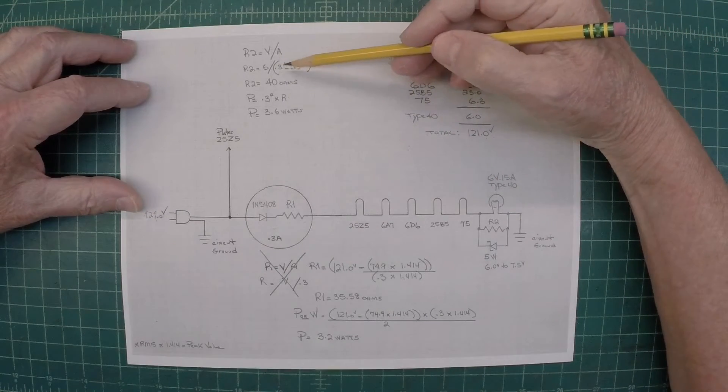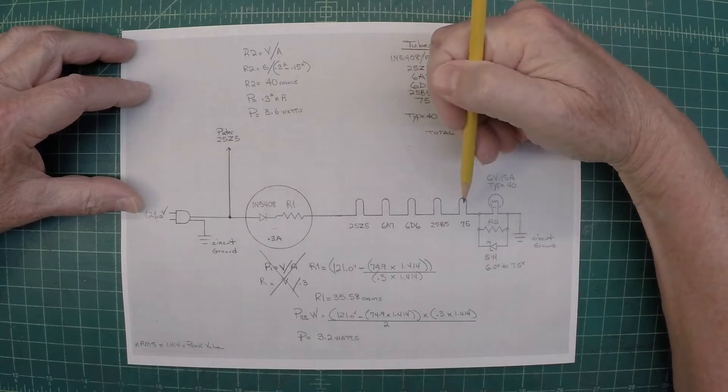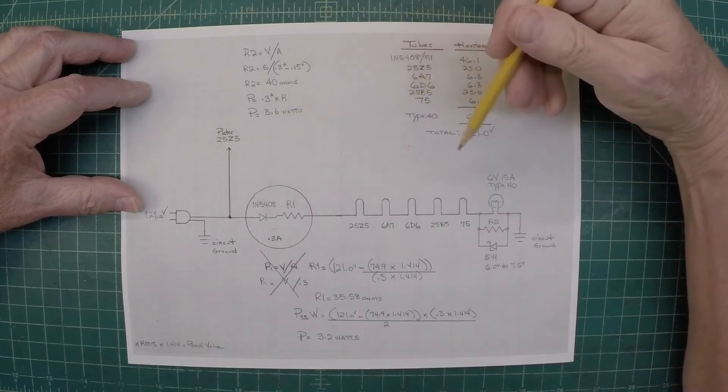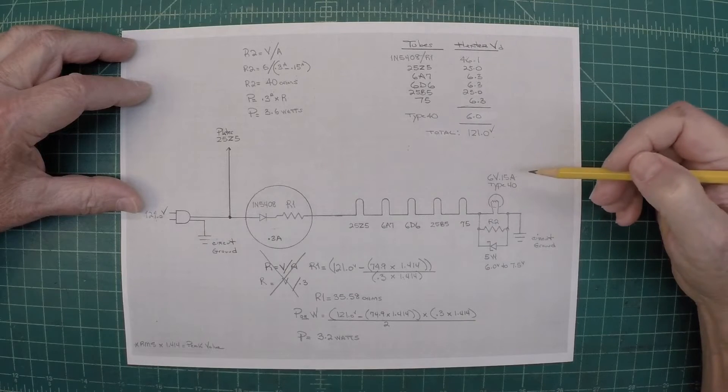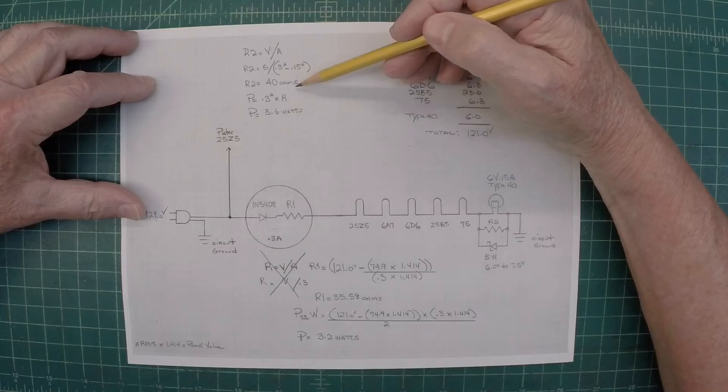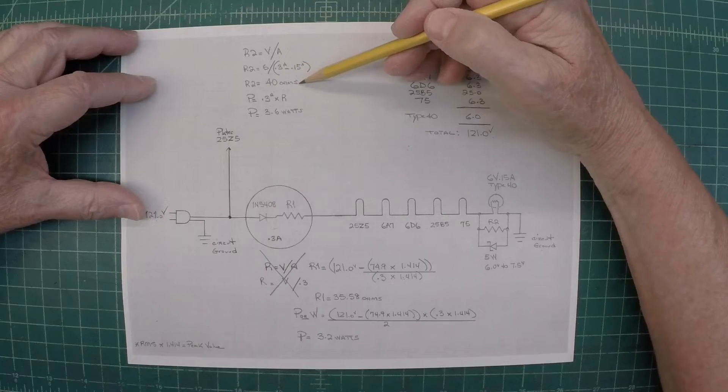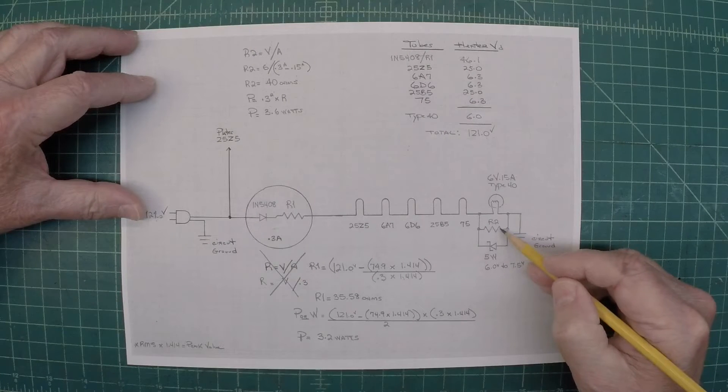all I'm doing is taking the voltage. I've done my design where I want 6 volts across the lamp itself, the type 40. I'm dividing that by 0.3 amps, the circuit itself, minus the 0.15 of the lamp rating itself because I need to make up the 150 milliamps. And doing the math, it comes out to 40 ohms. So that's what R2 will be, will be 40 ohms.